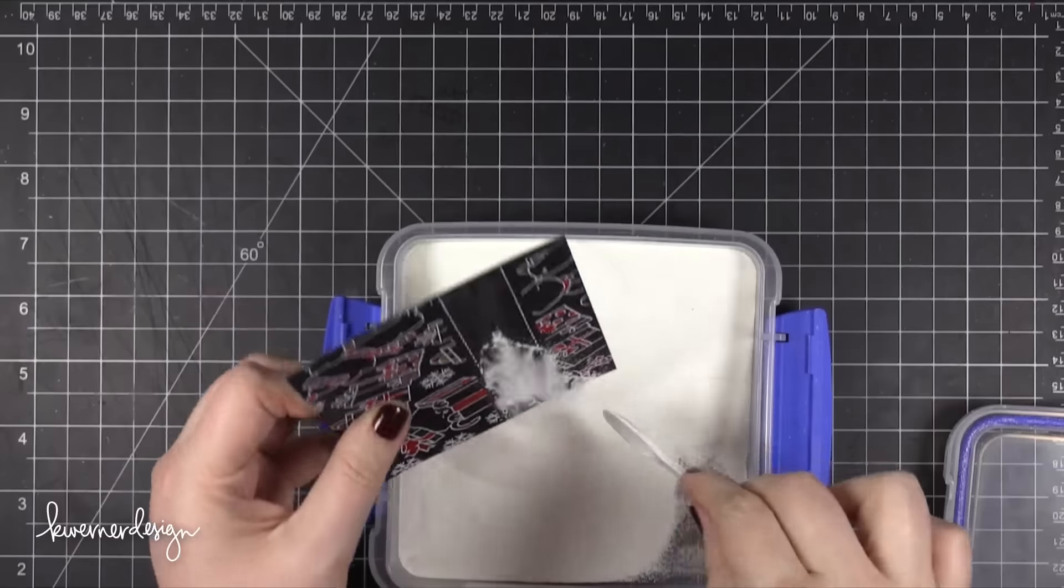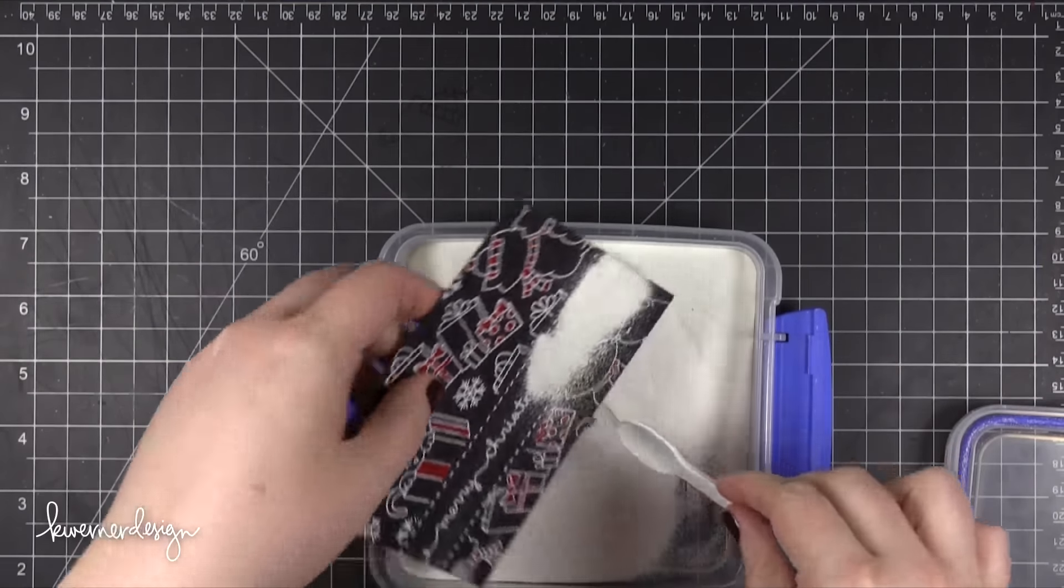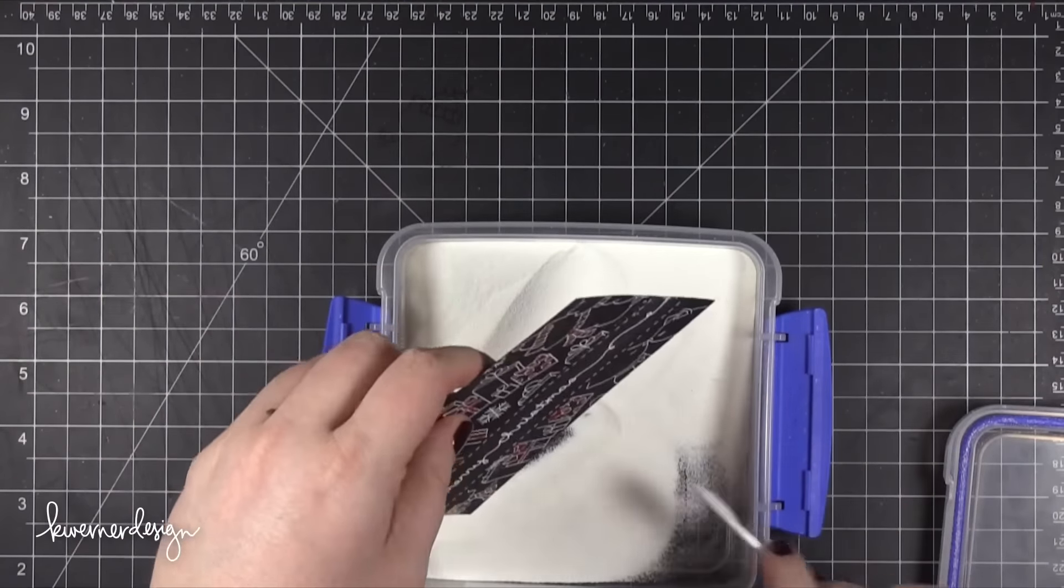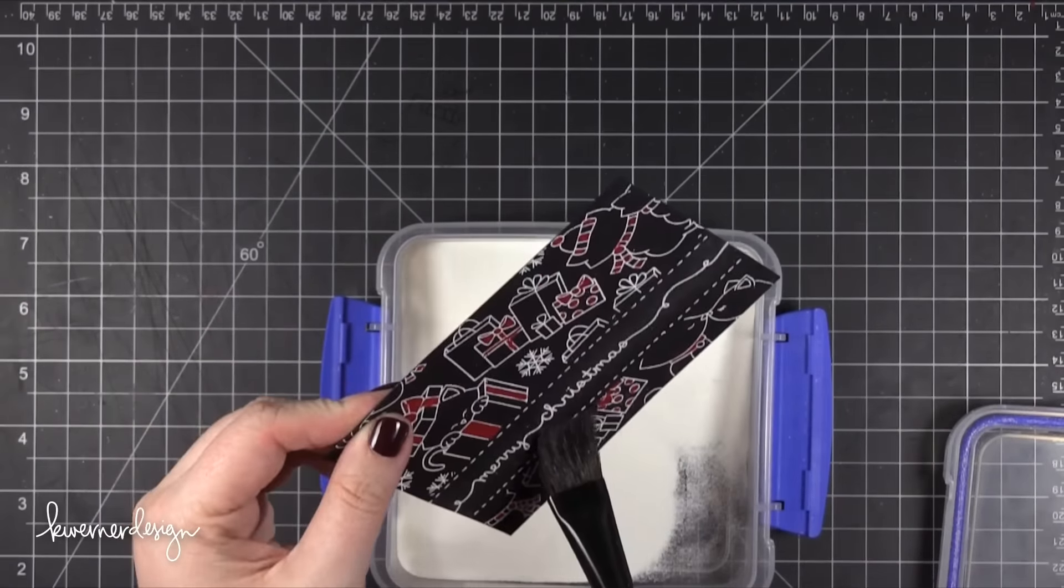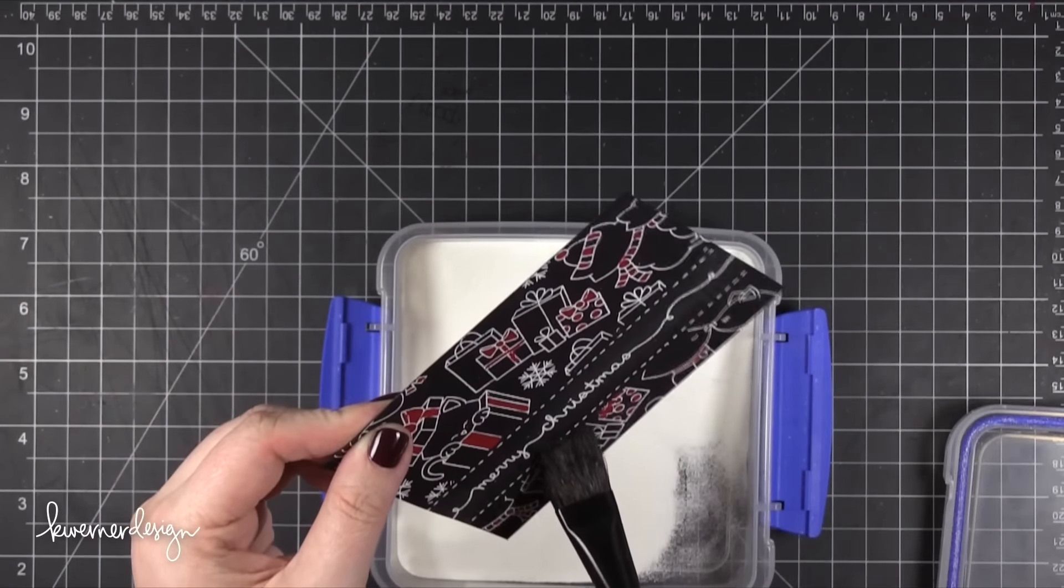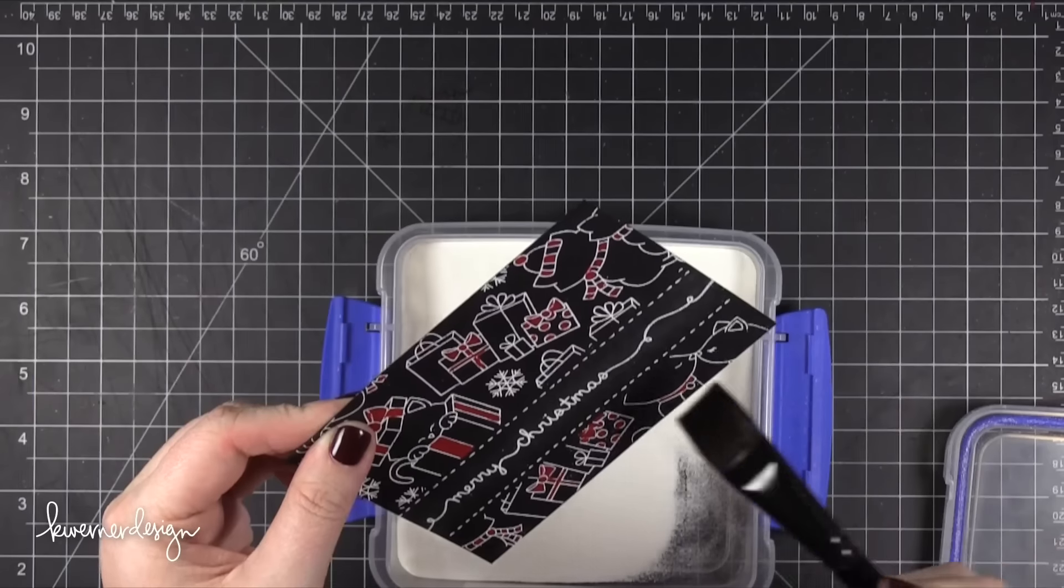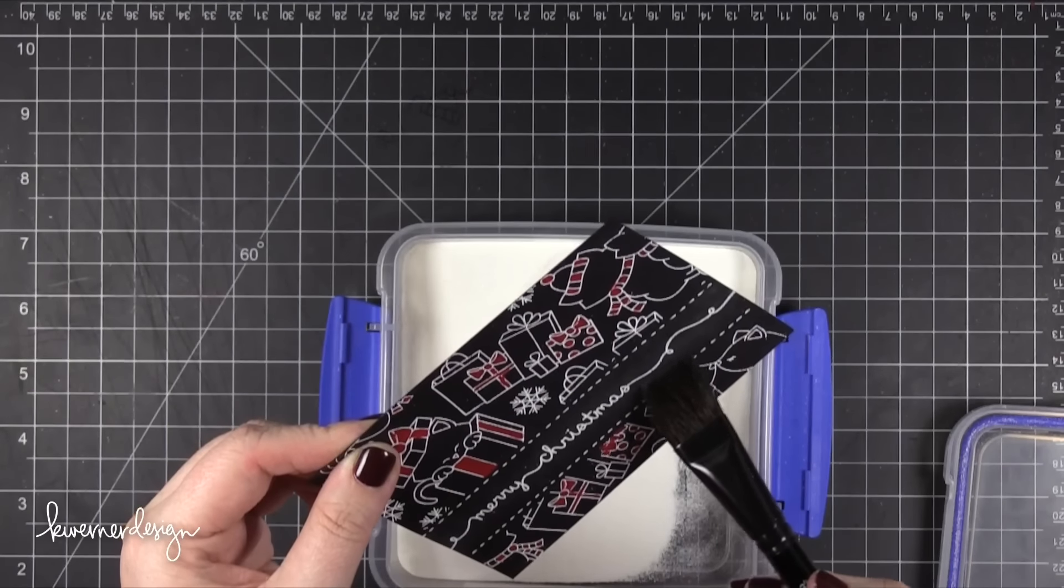So essentially this card design is all black and white with pops of red so it's super simple. You could swap out that red color for any other color you'd like. I think it would be really fun to make this in kind of like a fuchsia pink color. Kind of a really trendy non-traditional Christmas card. I think that would be really cool.